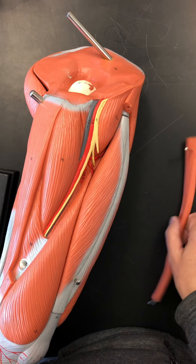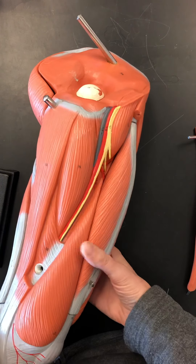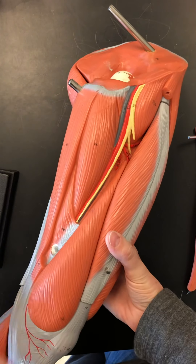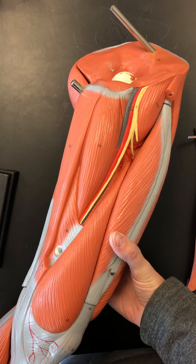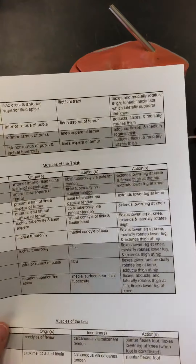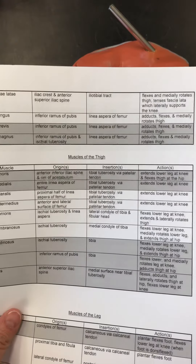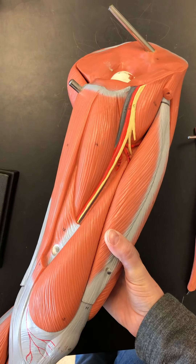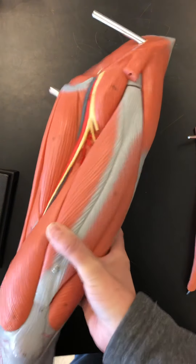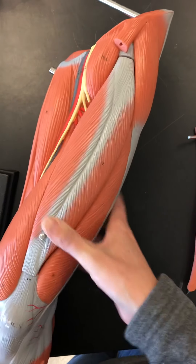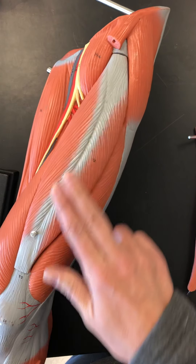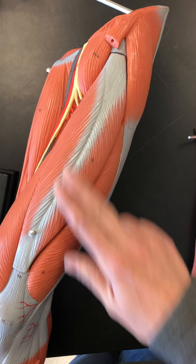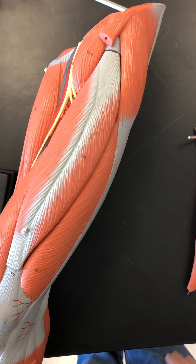Hello and welcome back. We are now on the next section of the muscle list: muscles of the thigh. We just got done with muscles of the hip. The first one we're going to take a look at is called the rectus femoris — that's the big front muscle of your quadricep group.